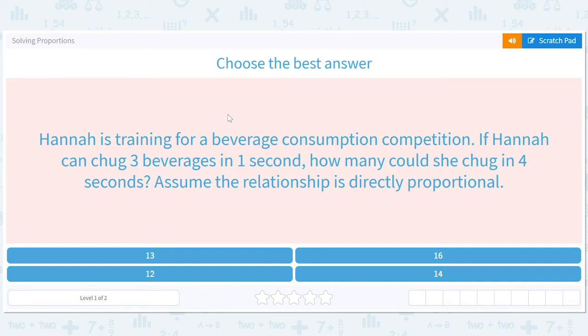So let's solve some proportions. Hannah's training for a beverage consumption competition. If Hannah can chug three beverages in one second, how many could she chug in four seconds?